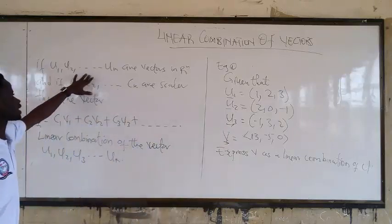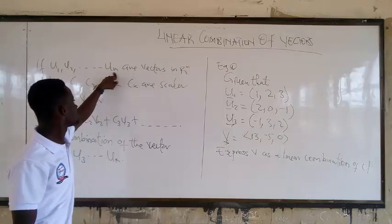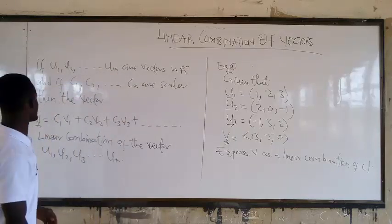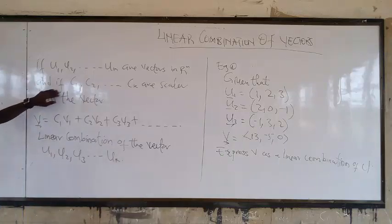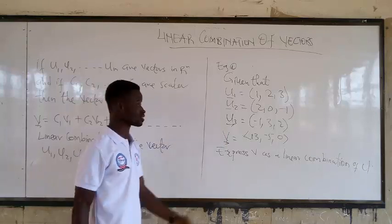So if U1, U2, U3, up to UK, that's representing numbers, are vectors in Rn. And the Rn is like 3D, 2D, and all that, okay?